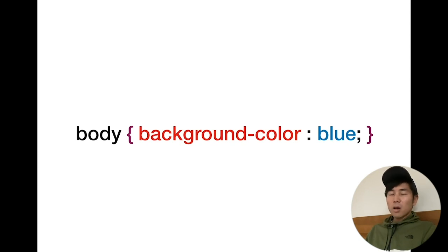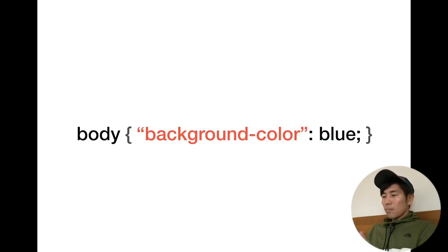In CSS, for example, background-color is regarded as a syntax label in CSS. background-color: blue is defined in the way you see right here. But if we put a quotation around background-color, then all of a sudden the background-color is regarded as just a string, a text, nothing more than a text. So this whole thing doesn't work anymore.